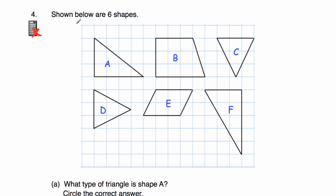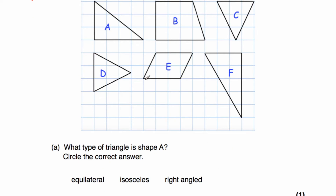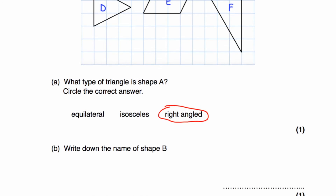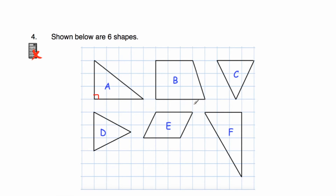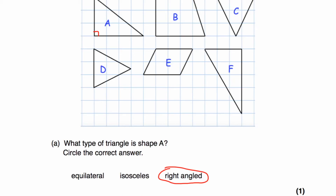Question number four: shown below are six shapes — a right-angle triangle A, a trapezium B, an isosceles triangle C, an isosceles triangle D, a parallelogram E, and a larger right-angle triangle F. Part A says: what type of triangle is shape A? It's not equilateral and not isosceles. It does have a right angle, so A is a right-angle triangle. Part B says: write down the name of shape B. Shape B is a trapezium — a quadrilateral with one pair of parallel sides, the top and the bottom.